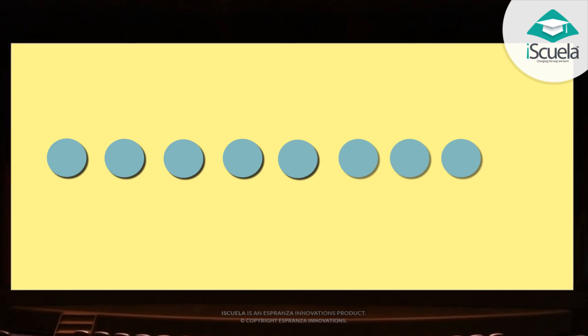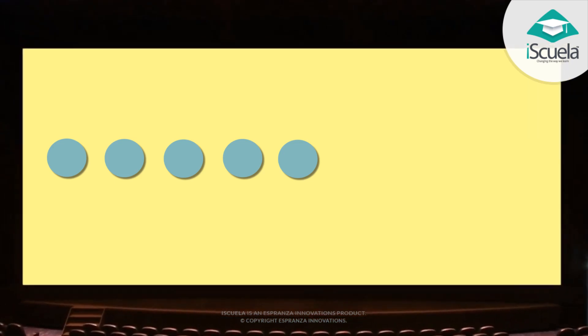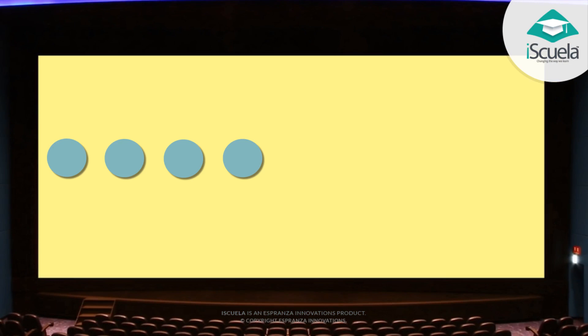Eight dots are less than nine. Seven are less than eight. Six dots are less than seven. Five are less than six. Four dots are less than five.